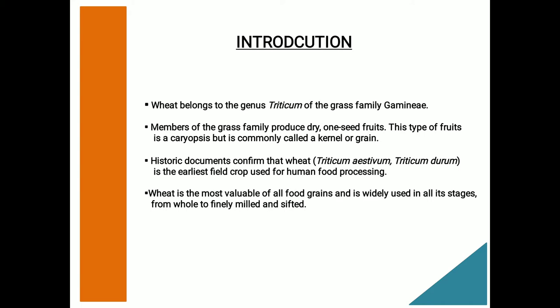Wheat is one of the most important cereal crops in the world. The wheat produced in the country belongs to Triticum aestivum, which is around 95%, Triticum durum, which is about 4%, and Triticum dicoccum, which is about 1%, and all of these are used for bakery, pasta, and traditional products.